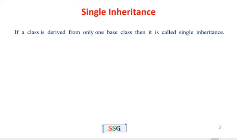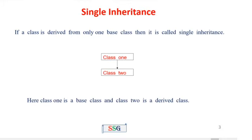The first type is single inheritance. If a class is derived from only one base class, it is called single inheritance. That means single inheritance contains one base class and one derived class. The figure shows class one and class two — class one is the super class or base class, and class two is the derived class.